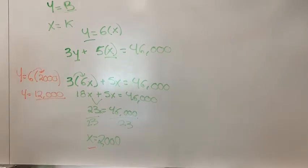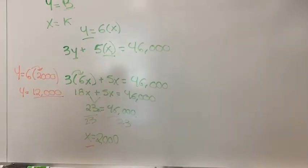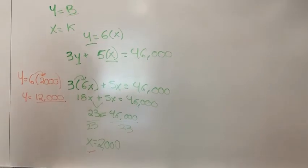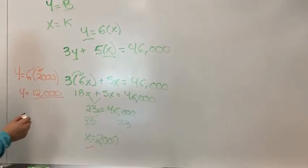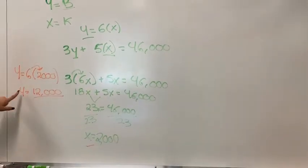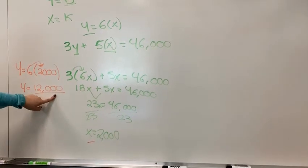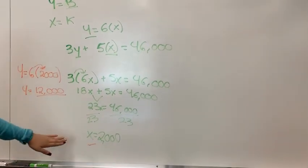And so the question and the word problem is how many of each type of rack should they sell to get a profit of $46,000? And so you would need 12,000 baseball racks and 2,000 karate racks.